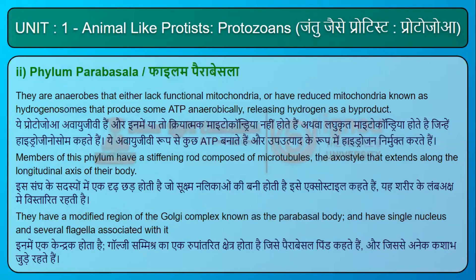Phylum Parabasila. They are anaerobes that either lack functional mitochondria or have reduced mitochondria known as hydrogenosomes, which produce some ATP anaerobically, releasing hydrogen as a byproduct. Members of this phylum have a stiffening rod composed of microtubules called the axostyle, which extends along the longitudinal axis of their body. They have a modified region of the Golgi complex known as the parabasal body, and have a single nucleus with several flagella associated with it.